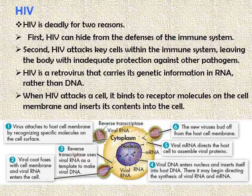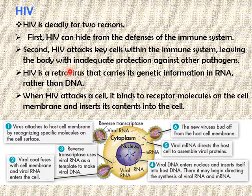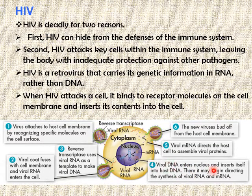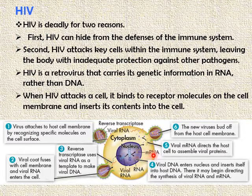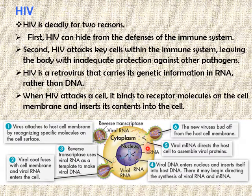Then a special enzyme called reverse transcriptase uses viral RNA as a template to make viral DNA. Viral DNA is made from viral RNA — that is a unique feature of retroviruses. Then the viral DNA enters the nucleus of the host cell and attaches to the host cell's DNA, inserting itself into the host DNA. There, it may begin to direct the synthesis of viral RNA and messenger RNA, instructing the host cell to prepare messenger RNA and viral RNA. The viral messenger RNA then directs the host cell to assemble viral proteins, which are assembled so that the virus becomes fully matured.